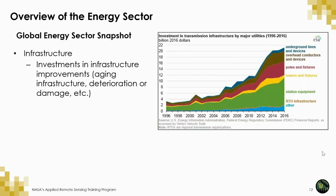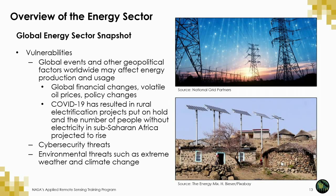Other types of energy infrastructure, such as underground lines, conductors, poles, fixtures, towers, stations, and other equipment, will continue to see a need for investment as the energy portfolio evolves. There are several important factors that can affect energy production, distribution, transmission, and consumption. Some vulnerabilities stem from geopolitical uncertainty, such as global financial changes, volatile oil prices, or policy change. COVID-19 has resulted in several projects, such as rural electrification, being put on hold. Parts of sub-Saharan Africa are expecting to see the number of people without electricity rise. Cybersecurity threats and environmental threats such as extreme weather or climate change can also pose serious threats to energy.